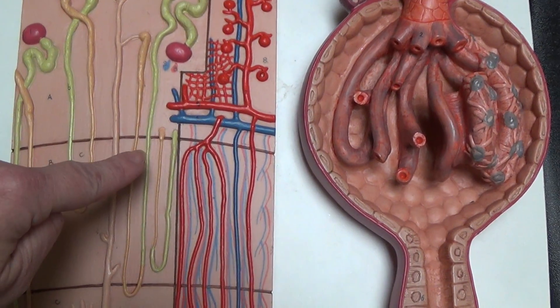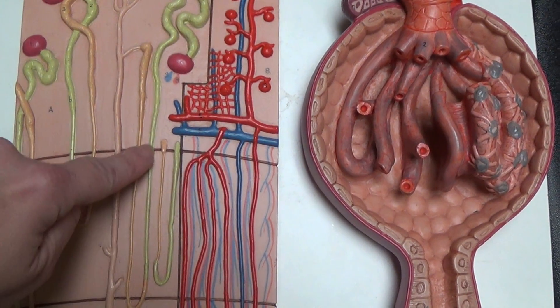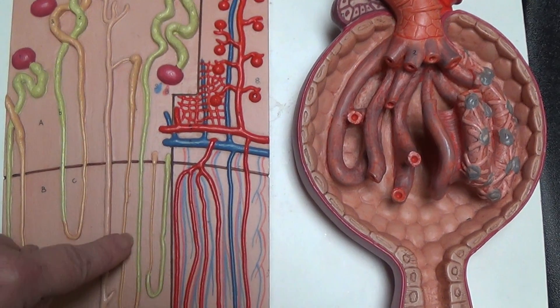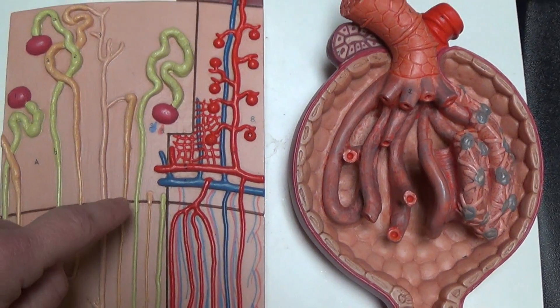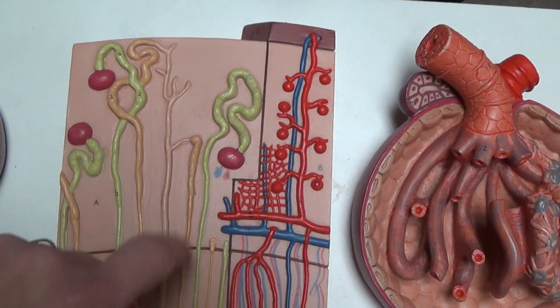As we follow this around, we get down and we see this loop structure. This loop is called the loop of Henle.